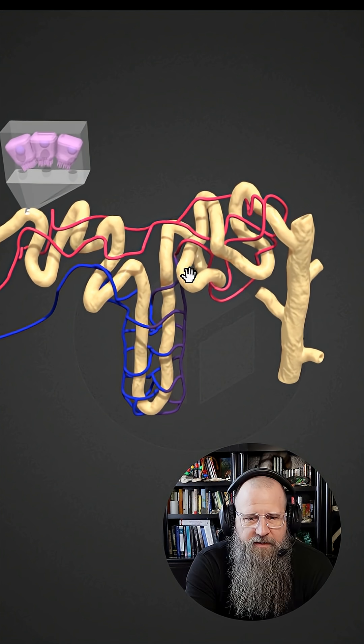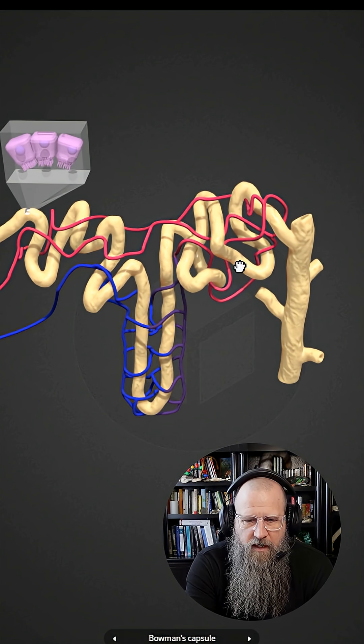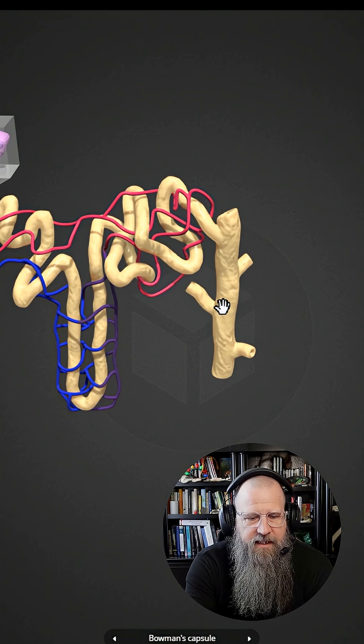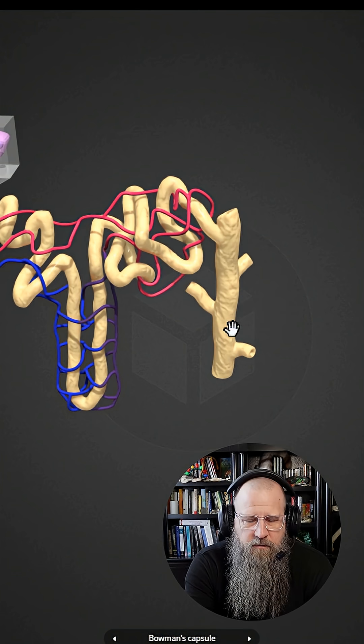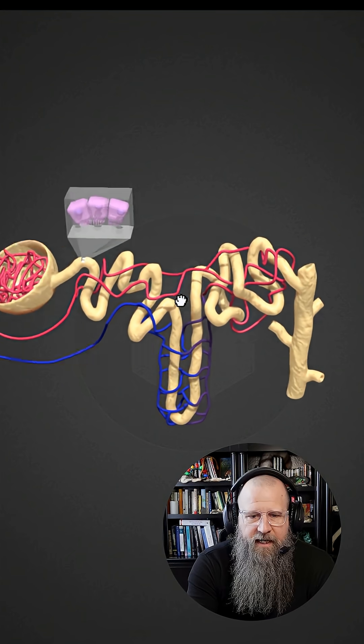From there, content will move into the distal convoluted tubule. This here is the distal convoluted tubule. And then finally into the collecting duct. So what you will see is that multiple nephrons will drain into a single collecting duct. So from beginning to end,